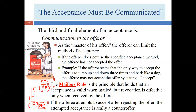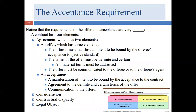If the offeree attempts to accept after rejecting the offer, the attempted acceptance is a counteroffer — we've already covered that. So that is our third and final element of acceptance. Now we have all four elements of a contract: agreement — which includes an offer with three elements and an acceptance with three elements — plus consideration, contractual capacity, and legal object. We'll cover these other topics in subsequent chapters.